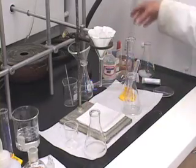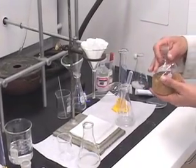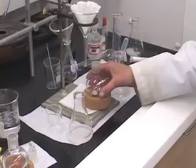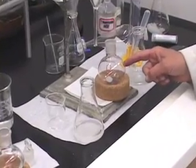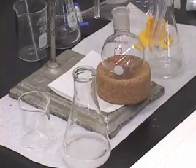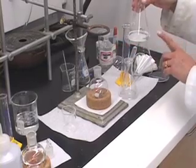Filter this solution into the second round bottom flask that you had kept ready for your acid component. Again, this round bottom flask has to be clean, dry, and pre-weighed. So do the same thing. Pour it through the funnel with the fluted filter paper.